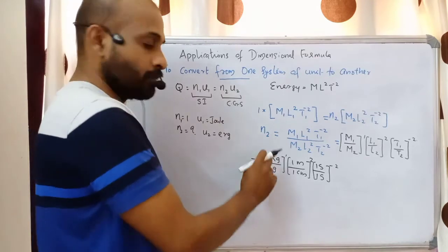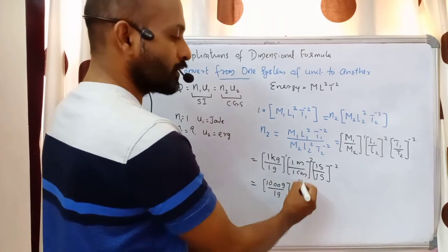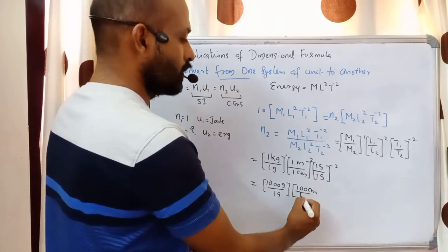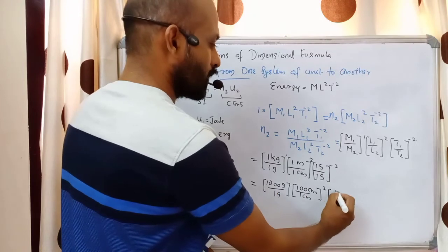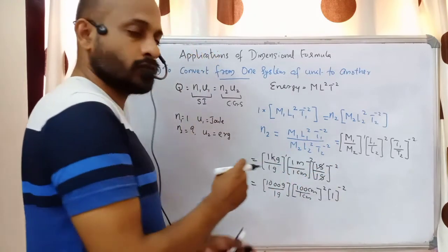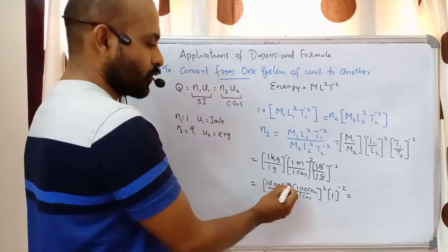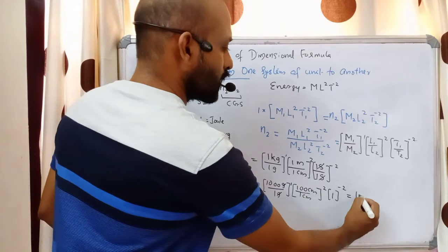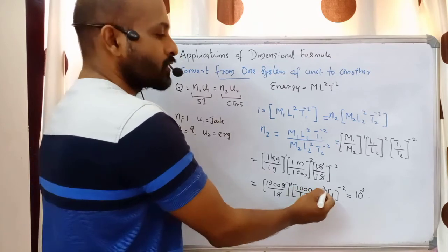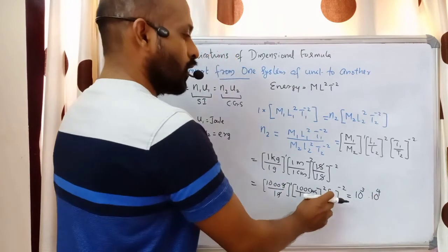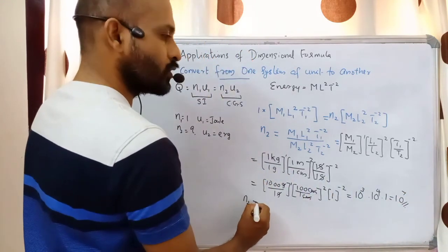Now we simplify. 1 kilogram equals 1000 grams, so 1000 gram over 1 gram gives 1000, which is 10 raised to 3. 1 meter equals 100 centimeters, so 100 centimeter over 1 centimeter gives 100, raised to the power 2, which is 10 squared raised to 2, giving 10 raised to 4. 1 second over 1 second raised to minus 2 gives 1. So N2 equals 10 to the 3 times 10 to the 4, which is 10 raised to 7.